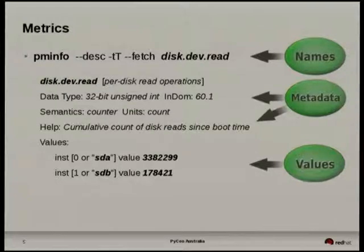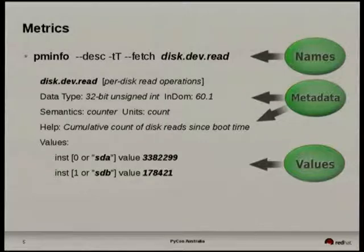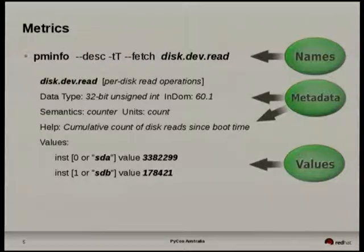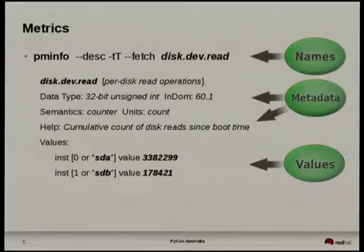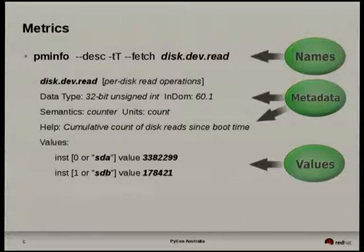The core concept within PCP is this idea of a performance metric — something you can measure, extract from the domain (be it the kernel or a daemon), and make available to other tools. PMInfo is an example of a simple client tool — you give it a metric or group of metrics and it reports information about those metrics live or historically. The key concept here is the metric name. We have a hierarchical namespace of metrics, so for example disk.dev.read refers to disk devices and read operations.